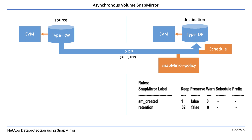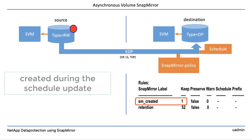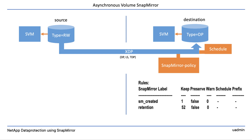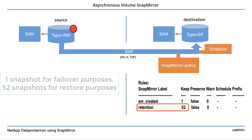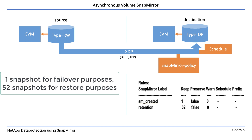Let's look at these rules. The first rule says that when executed, it will search for a snapshot with a SnapMirror label created by the SnapMirror update on the source volume — that's done automatically, not something you create. The second rule searches for a SnapMirror label called 'retention' on the source volume and will keep 52 snapshots at the destination. The result of this policy is that you replicate a single snapshot for disaster recovery purposes and keep 52 snapshots with the retention label.